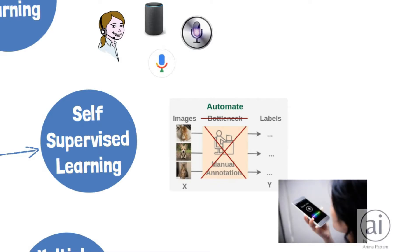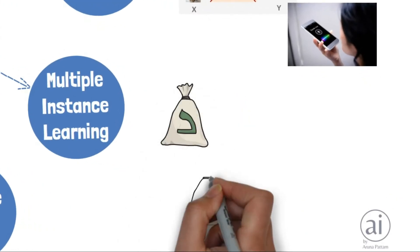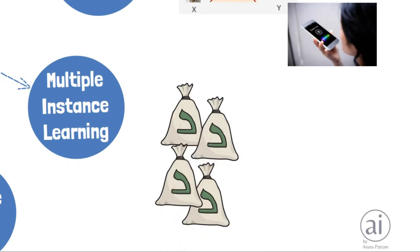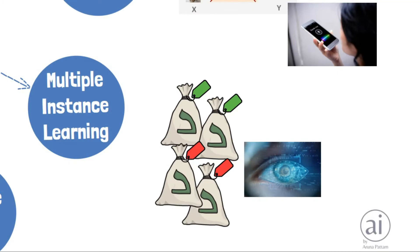Multiple instance learning: here the training data isn't labeled individually. It is arranged in bags and the entire bag is labeled. Used in areas like computer vision.